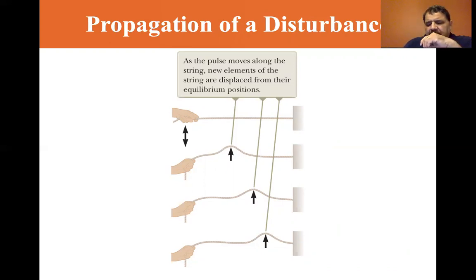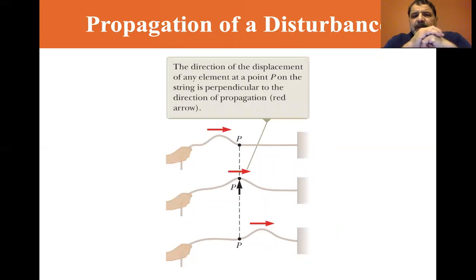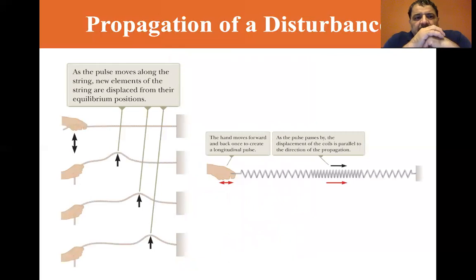It's just the wave itself is propagating down the length of the string. And the actual string parts are moving up and down vertically. The direction of the displacement of any element at point P on the string is perpendicular to the direction of the propagation. The direction of the propagation is the red arrow. The black arrow is the displacement of the element P. You can see that P is at the same location in all three of these position graphs. As the pulse moves along the string, new elements of the string are displaced from the equilibrium position. Now, let's look at it. So that is a transverse wave.